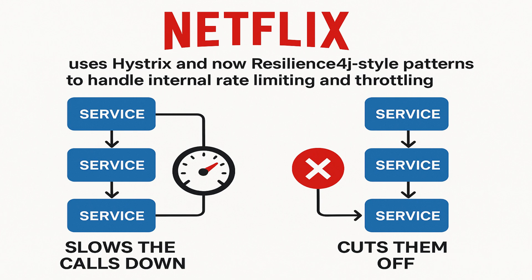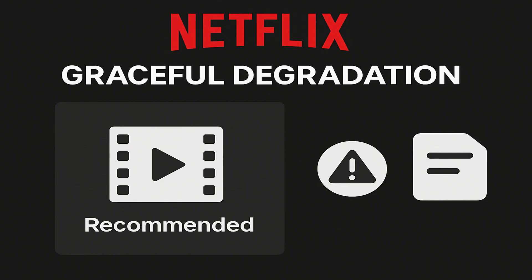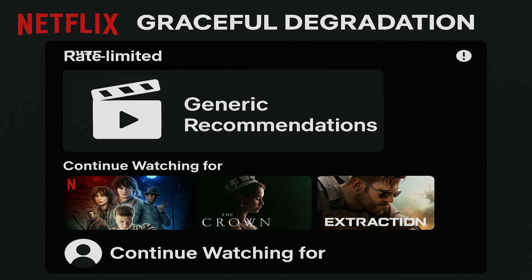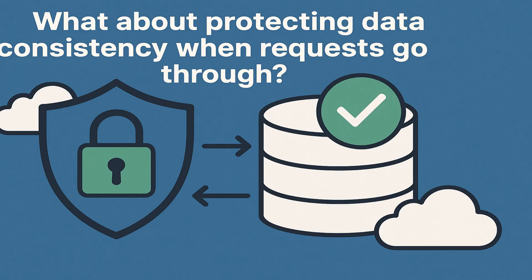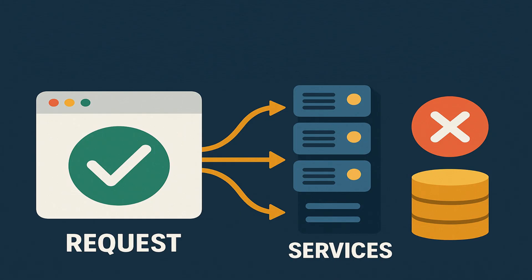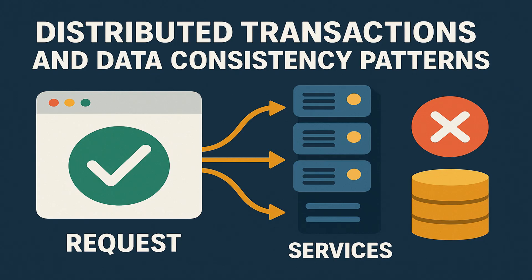With this, they protect slower or non-scalable services from being overloaded. The last important point is fallback and graceful degradation. If the recommendation service is rate limited, instead of failing the whole home page, Netflix shows a generic recommendation block, logs the rate limiting event, and keeps the rest of the application working. This is what they call graceful degradation. That's how rate limiting and throttling keep their services stable even under unexpected load and abuse. But protecting your system from traffic is just one part — what about data consistency when requests go through multiple services? That's where distributed transactions and data consistency patterns come in, and that's exactly what we'll cover next.